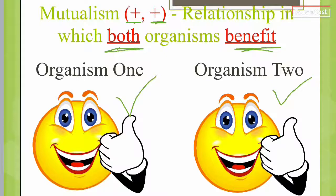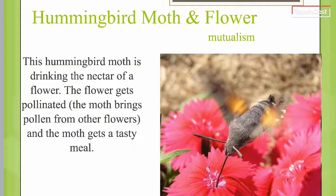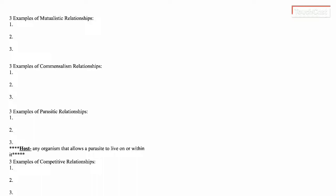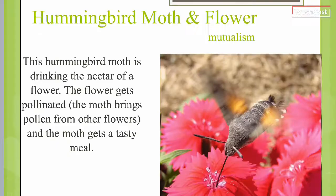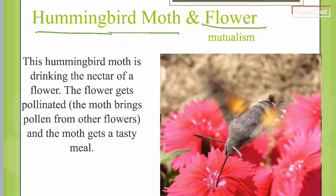Inside your foldable you're asked to list some examples — three examples. All you have to do is write down the names of the organisms. The first example is the hummingbird moth and the flower — this is a mutualistic relationship.